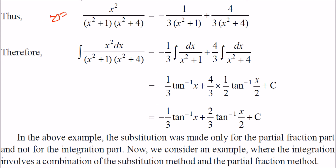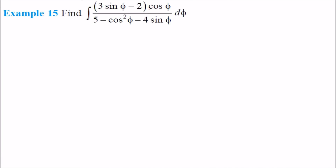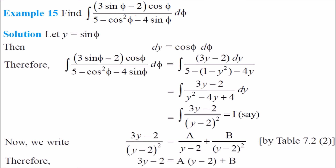After finding A and B, replace y back with x². Each term becomes a standard integral of the form dx/(x²+a²) = (1/a)·tan⁻¹(x/a). For the term with y+1, a = 1, so nothing extra appears; for y+4, a = 2, giving (1/2)·tan⁻¹(x/2). This gives the complete solution.